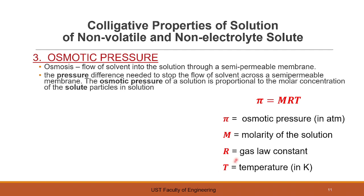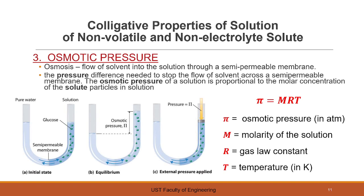The formula for osmotic pressure is quite easy to remember: it is MRT, where M is the molarity of the solution, R is the gas law constant in ATM, and T is the temperature in Kelvin. On the right side, there is an illustration of the semi-permeable membrane showing the pressure difference required to stop the flow of solvent through it.